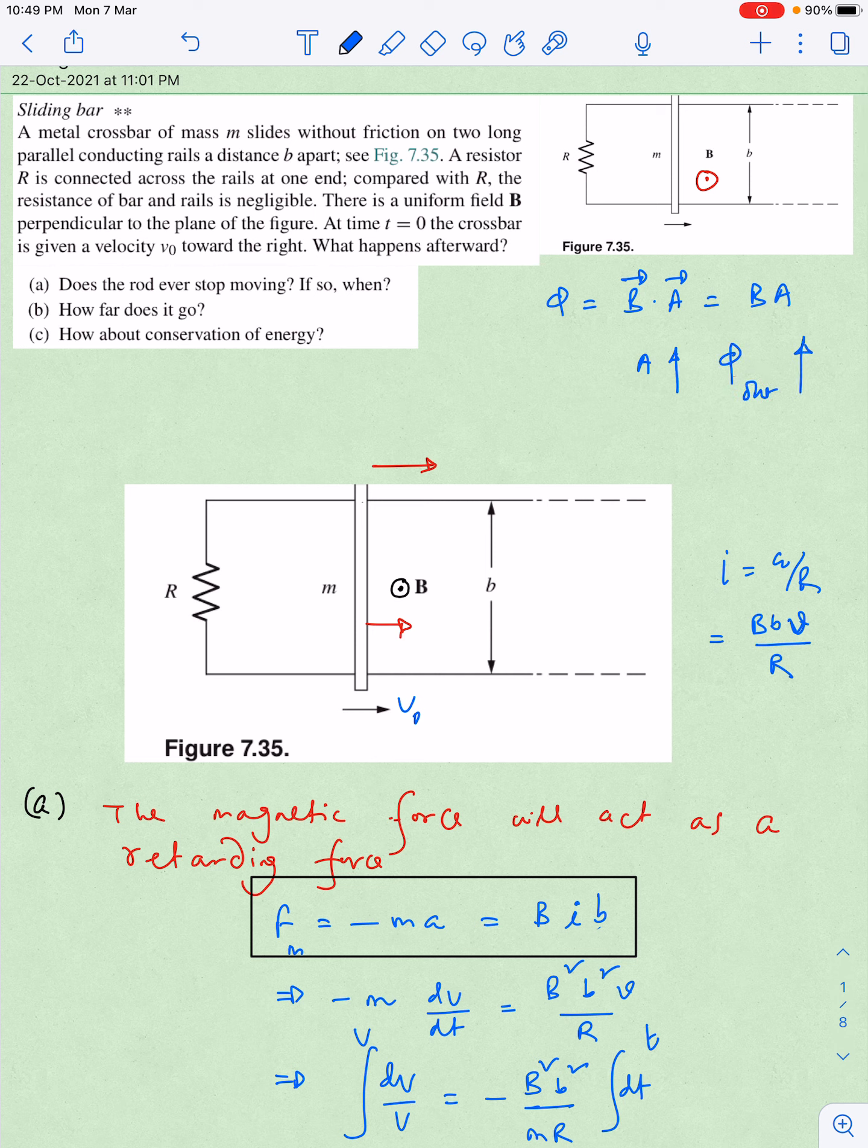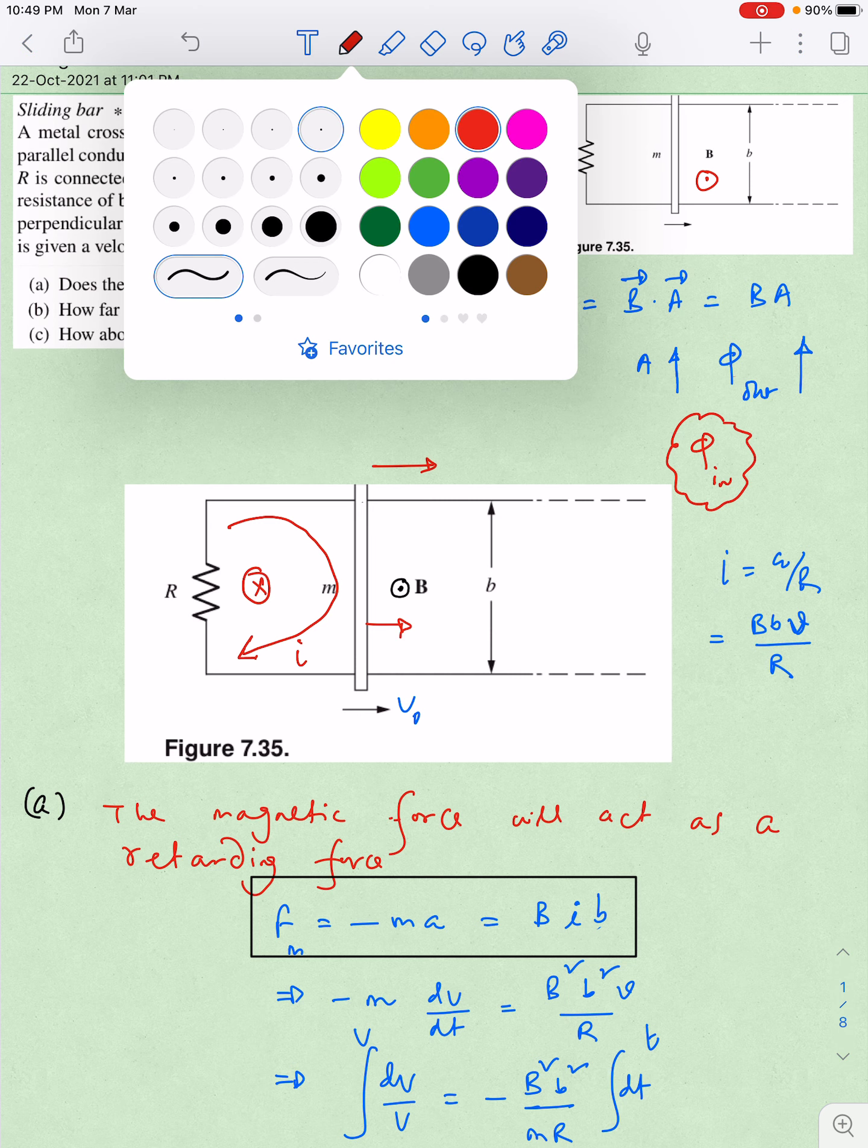So as per Lenz's law what will happen? This outward growing magnetic flux has to be opposed, and because of that phi inward should be induced. So inward means the field will be induced magnetic field will be inward, and if we apply right hand thumb rule, the direction of induced current will come in that direction. If that is the case, think step by step then the current flows through the rod in that direction.